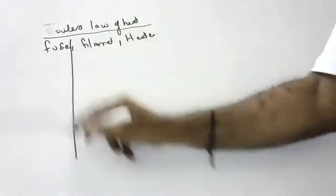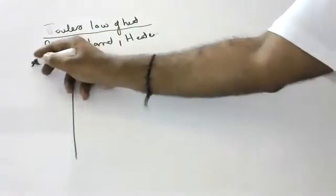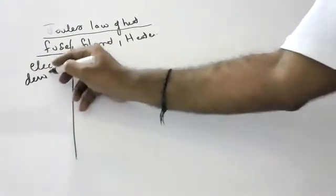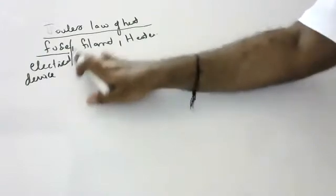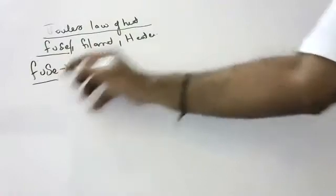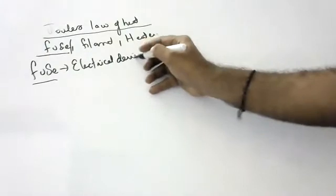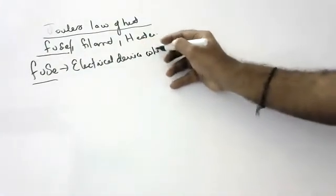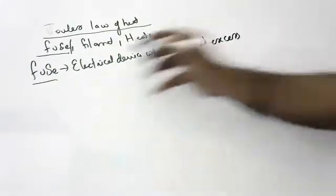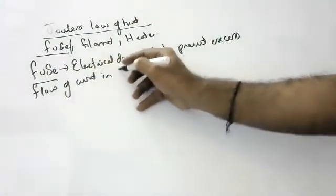First of all, a fuse is a small electrical device which prevents excess flow of current in a circuit.